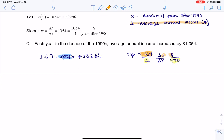So that's why you see me picking option C. Each year in the decade of the 1990s, the average annual income increased by not $10,000, but $1,054.